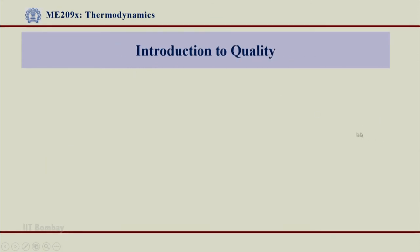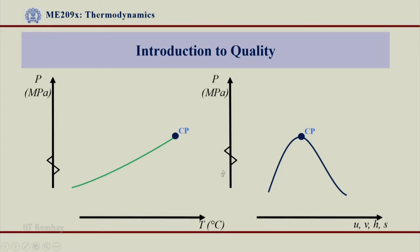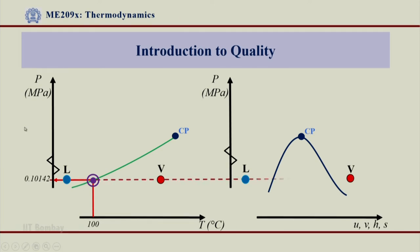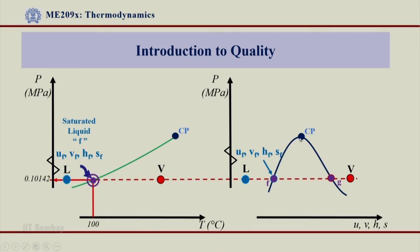Introduction to quality is what we are going to talk about. I have a P-T diagram and a P-V diagram showing the L and V regions. If I take any condition which lies on the LV line — the saturated liquid-vapor line — and draw a horizontal at the same pressure, I can see on the P-V diagram the left side of the dome is saturated liquid and the right side is saturated vapor.